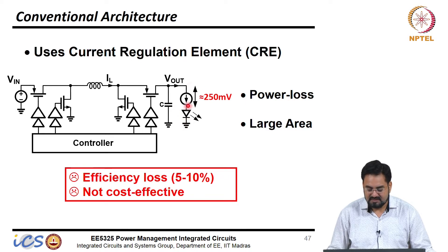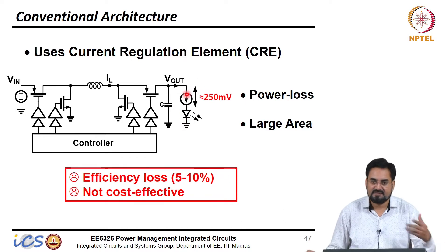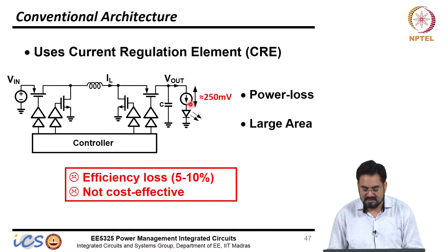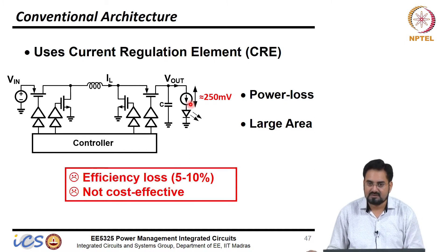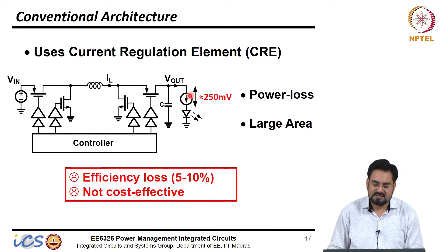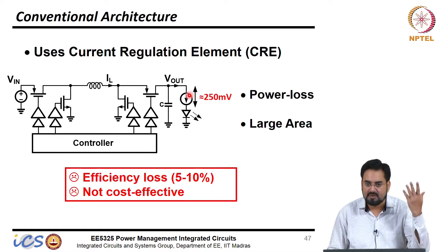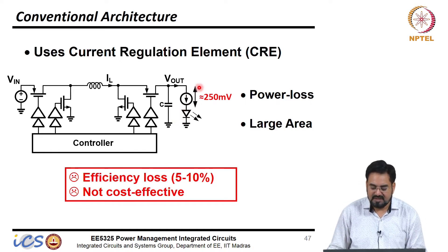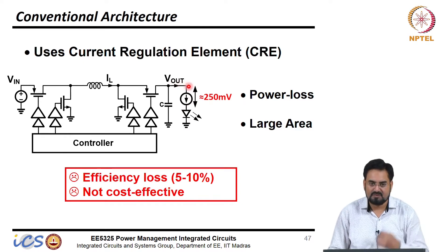The way it is done is that we have a constant current, just like we had in backlight — that was a sink, here I am showing a source current. You can have either sink or source depending upon if you have the option of using higher voltage. For a single LED the voltage required would not be like 28 or 30 volts as in backlight. The forward voltage is at most 3.5 to 3.6 volts, so if I drop 50 millivolts the output voltage will not be more than about 4 volts.